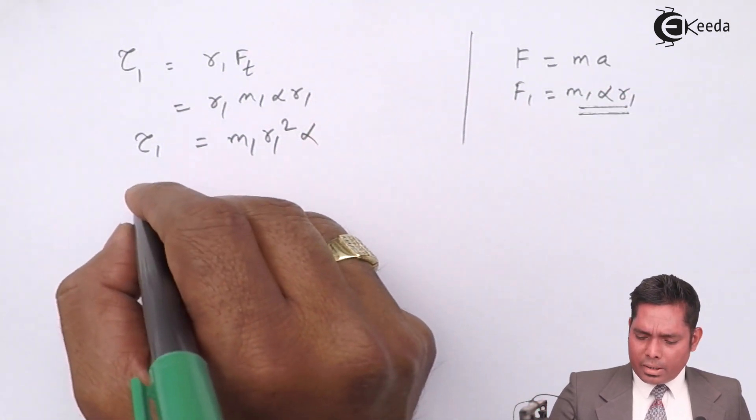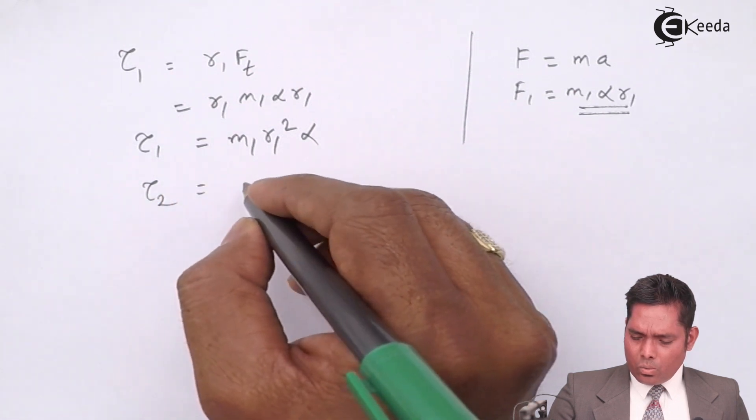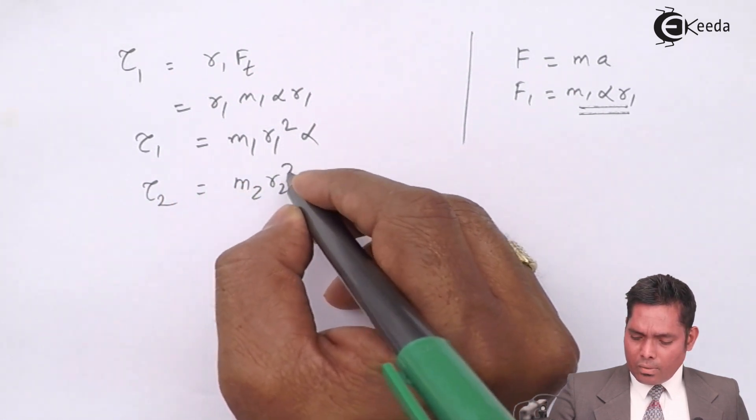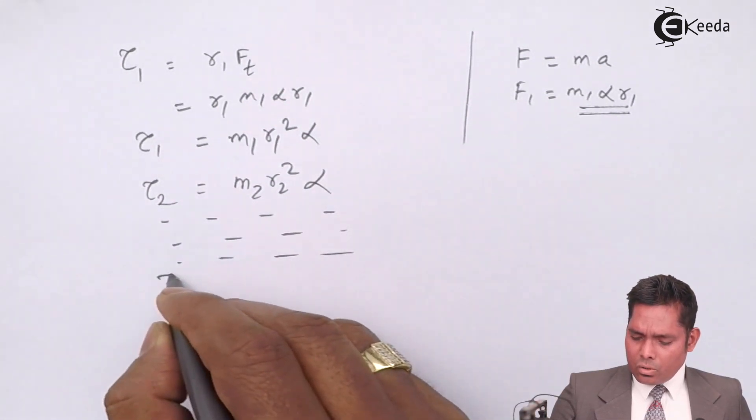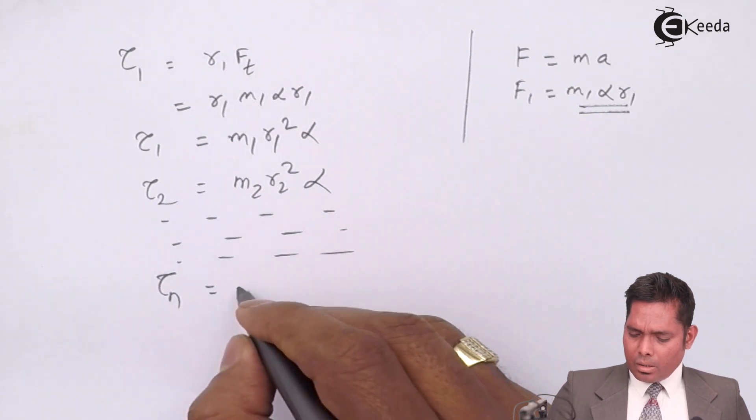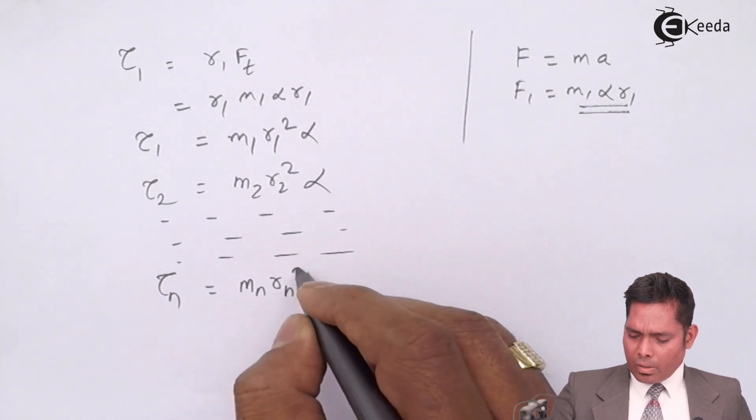Similarly for the second particle, tau 2 is m2 r2 square alpha. And if I proceed like that, the torque for the last particle will be mn rn square alpha.